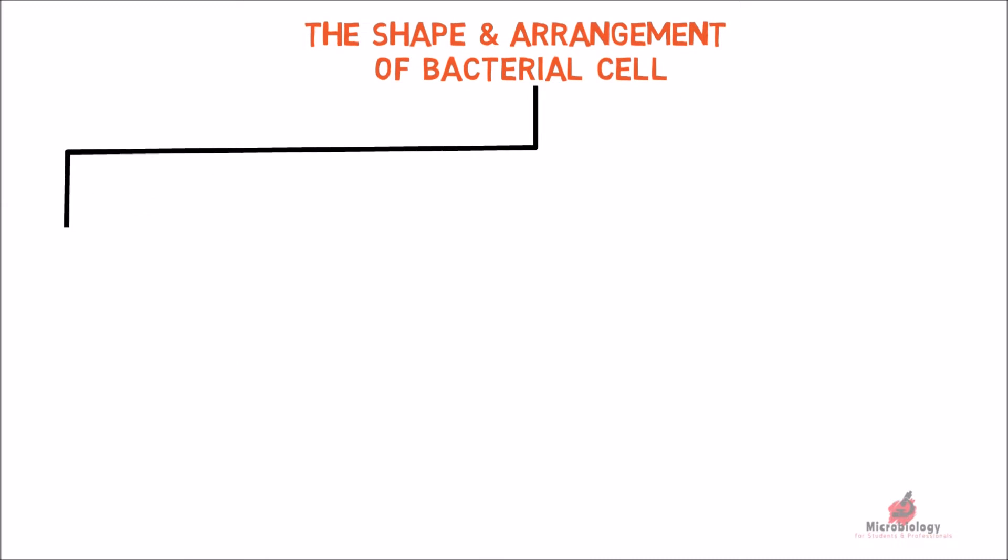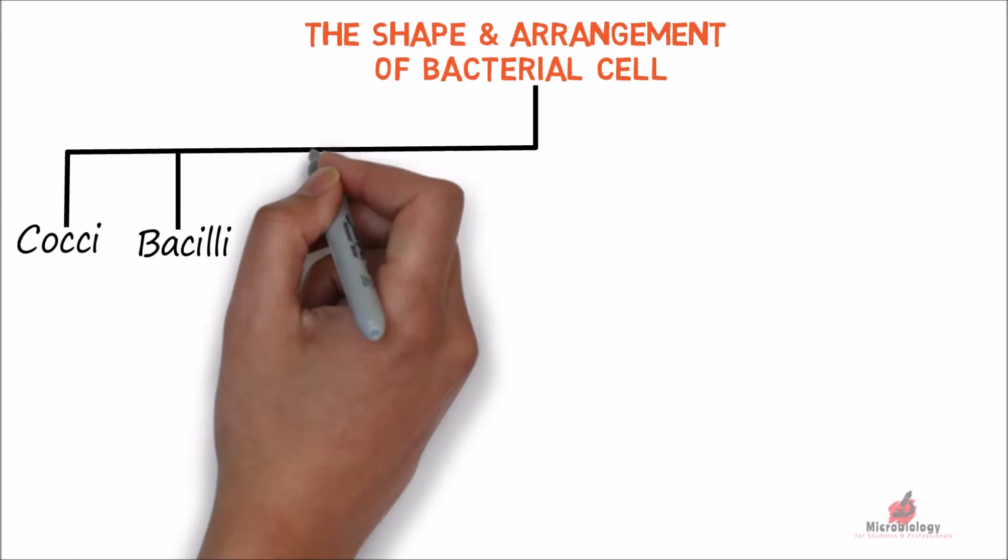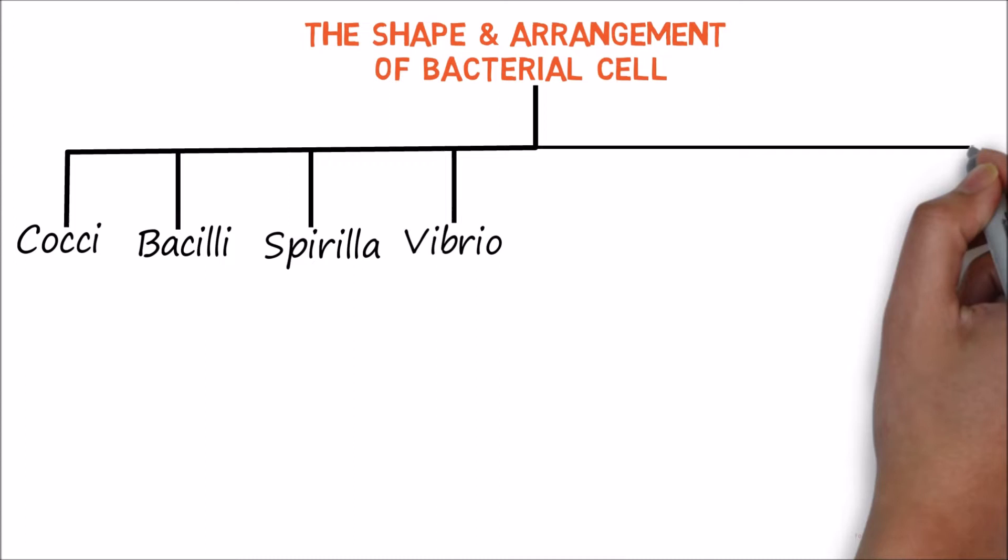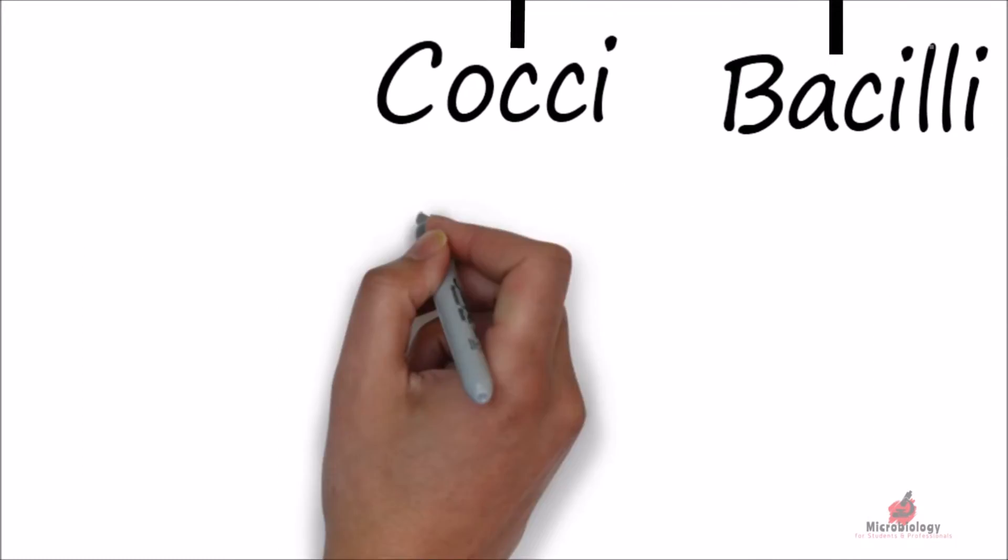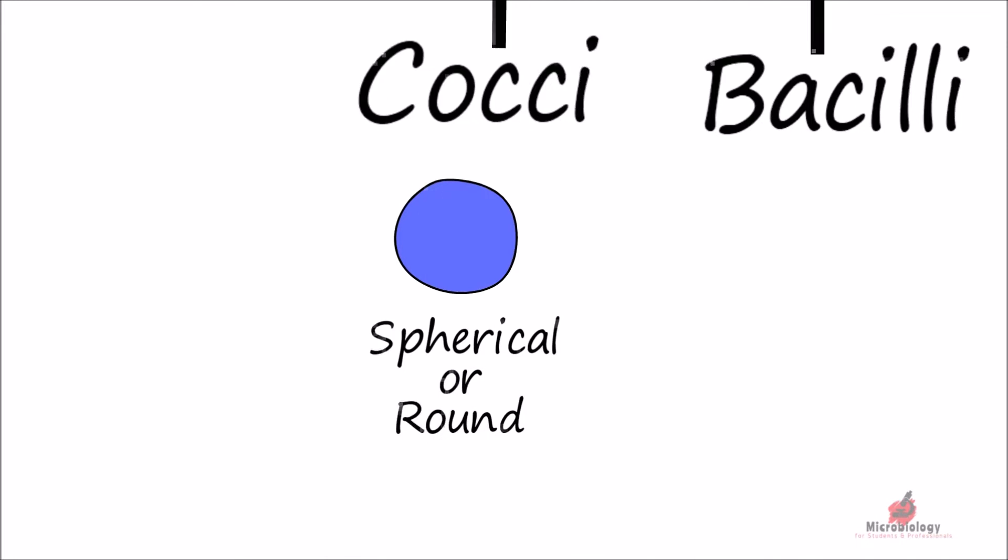Depending on the shape, the bacterial cells are cocci, bacilli, spirilla, vibrio, spirochetes, filamentous, and pleomorphic. Cocci are spherical or round in shape.